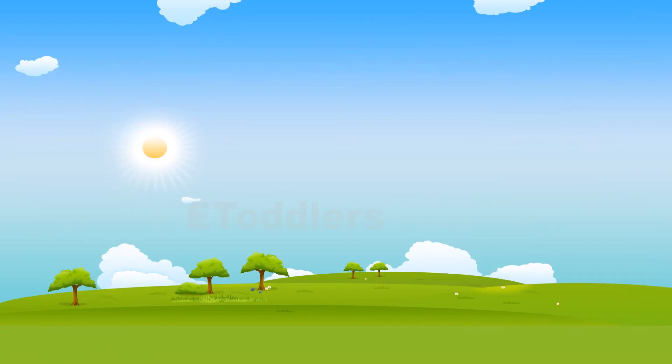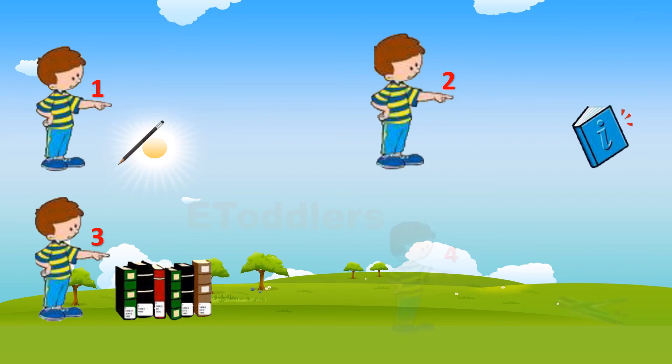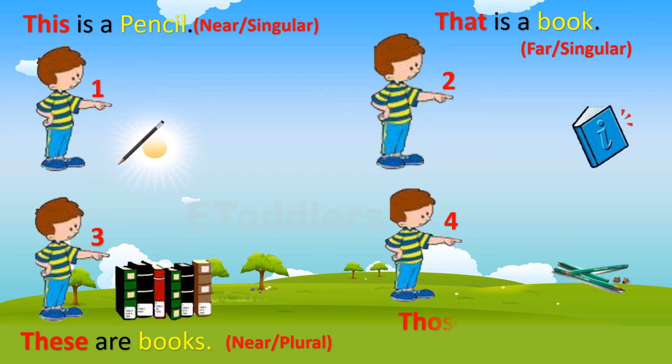Let's see the picture and complete the sentences with appropriate demonstratives. Yes, this is a pencil. Yes, that is a book. You are right, these are books. Correct, those are pencils.